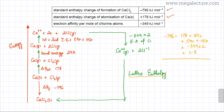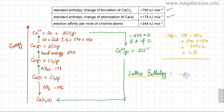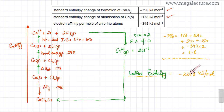I'm going to do the calculation on my calculator. Be very careful with the values and the negative and positive signs — a lot of people make mistakes, so always double-check your calculation. Solving the equation, the lattice enthalpy is minus 2258 kilojoules per mole. This looks correct because lattice enthalpy is always exothermic, and the value generally falls in the range of 1000 to 3000 kilojoules per mole. This value fits perfectly in that range.